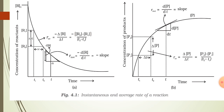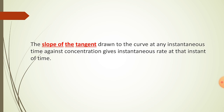That itself is the instantaneous rate of velocity of a reaction. The slope of the tangent drawn to the curve at any instantaneous time against concentration gives the instantaneous rate at that instant of time. That is the instantaneous rate of a reaction.